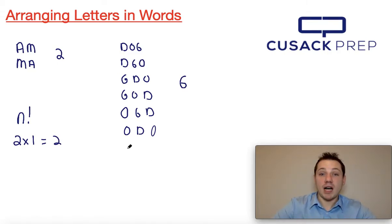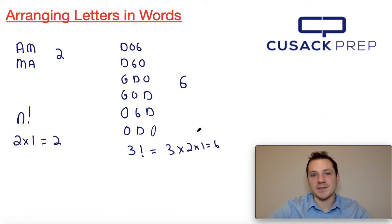For a word like dog, well, dog has three letters, so we would do three factorial, which would be three times two times one, which would give us six. So we can at least verify that this works for the first two sets of letters.